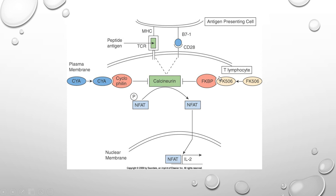The way in which these drugs work is two-fold. For FK506, or tacrolimus, it binds onto FK-binding protein, and for cyclosporine A, it binds onto cyclophilin. Both cyclophilin and FK-binding protein inhibit calcineurin. By inhibiting calcineurin, it can no longer dephosphorylate NFAT, and therefore NFAT cannot translocate into the nucleus and lead to expression of IL-2.